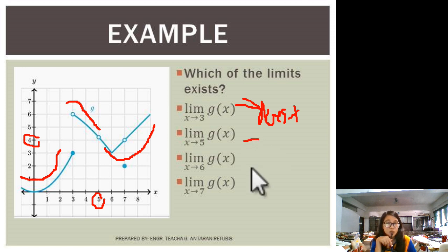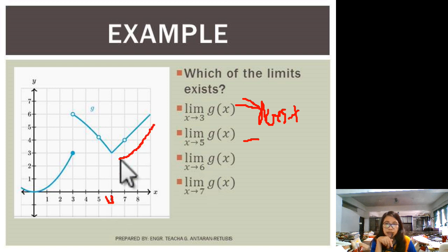How about as we approach 6? Where is 6? Where is 6? This one. As we approach 6, this one is 6. From the right, the value is 3. Okay? From the left, it is also 3. So therefore, this also exists.